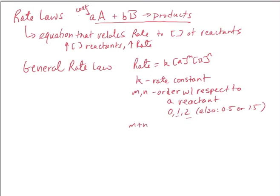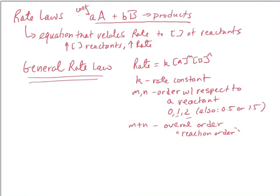The overall reaction order is M plus N, which tells you what overall order the entire reaction is. For example, if M equals 1 and N equals 1, the overall order would be 2 — a second-order reaction. M, N, and k all have to be determined experimentally. We're going to use the method of initial rates in the next section to determine M, N, and k experimentally.